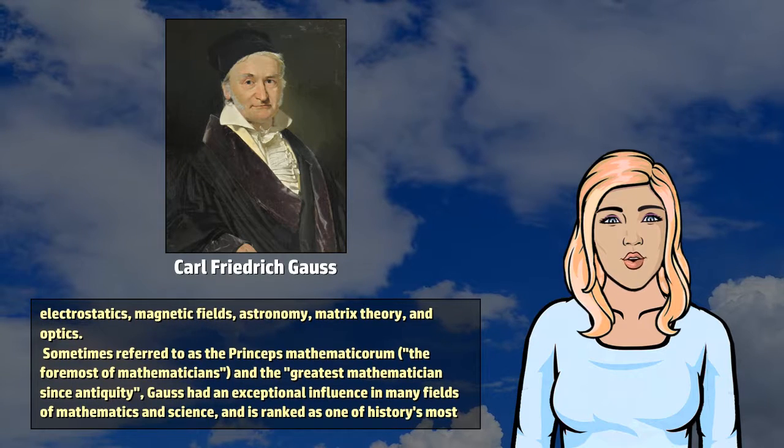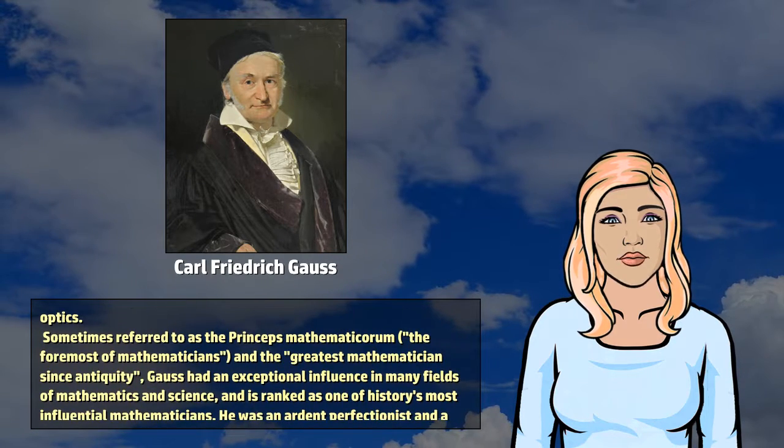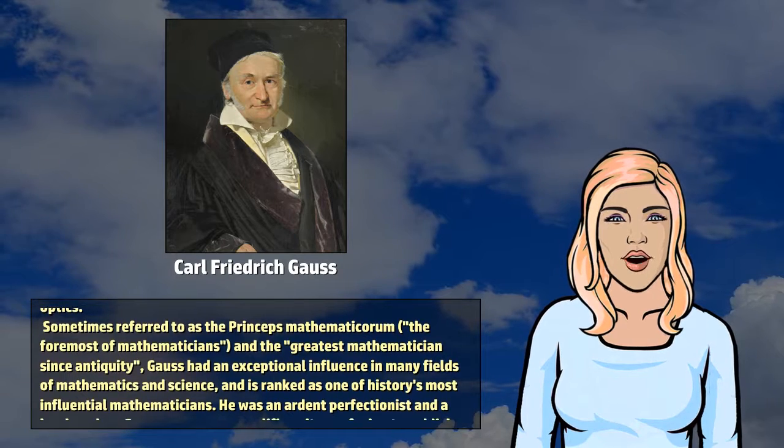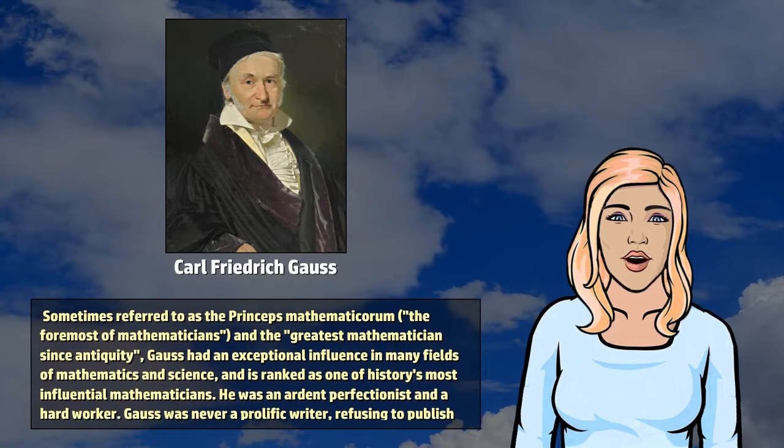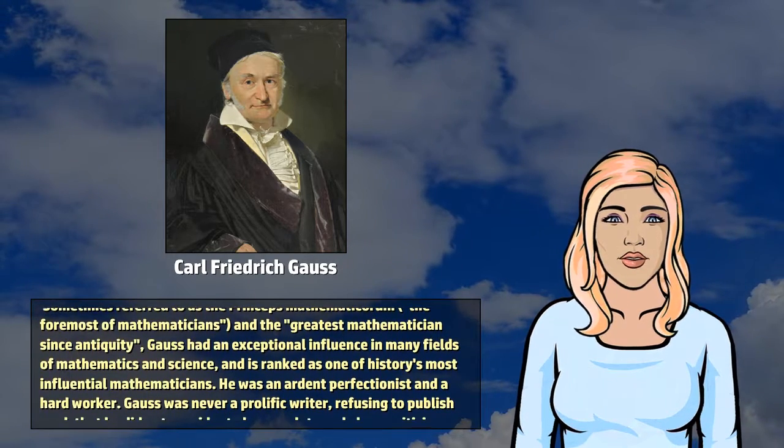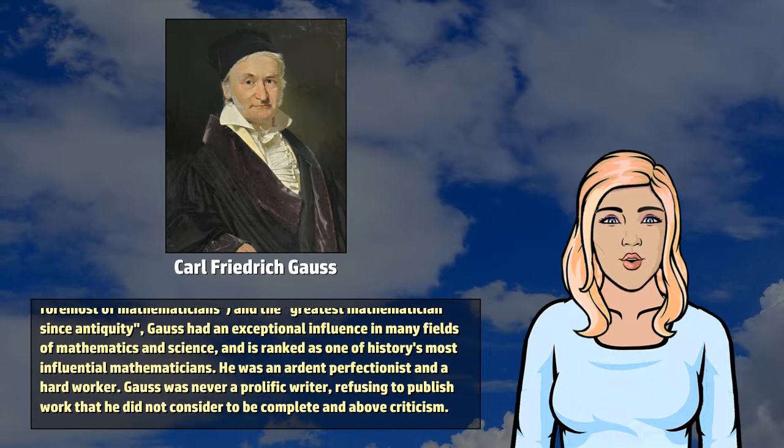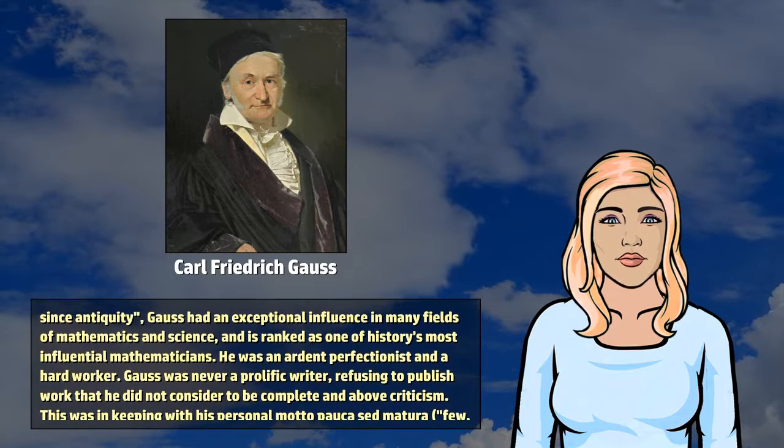Sometimes referred to as the Princeps Mathematicorum, the foremost of mathematicians, and the greatest mathematician since antiquity, Gauss had an exceptional influence in many fields of mathematics and science, and is ranked as one of history's most influential mathematicians.